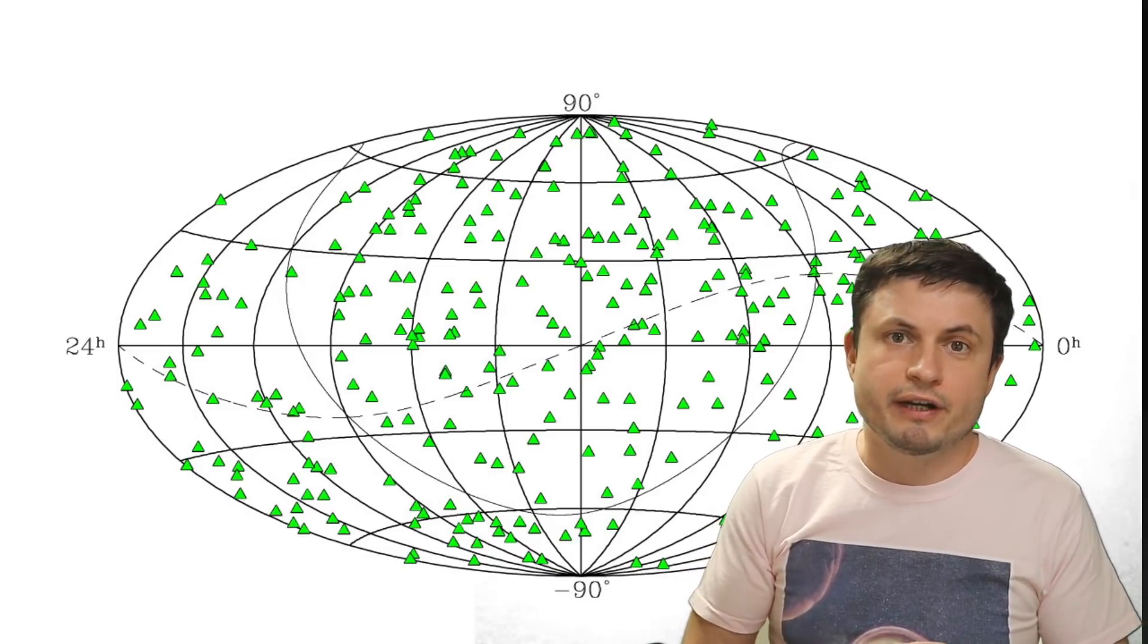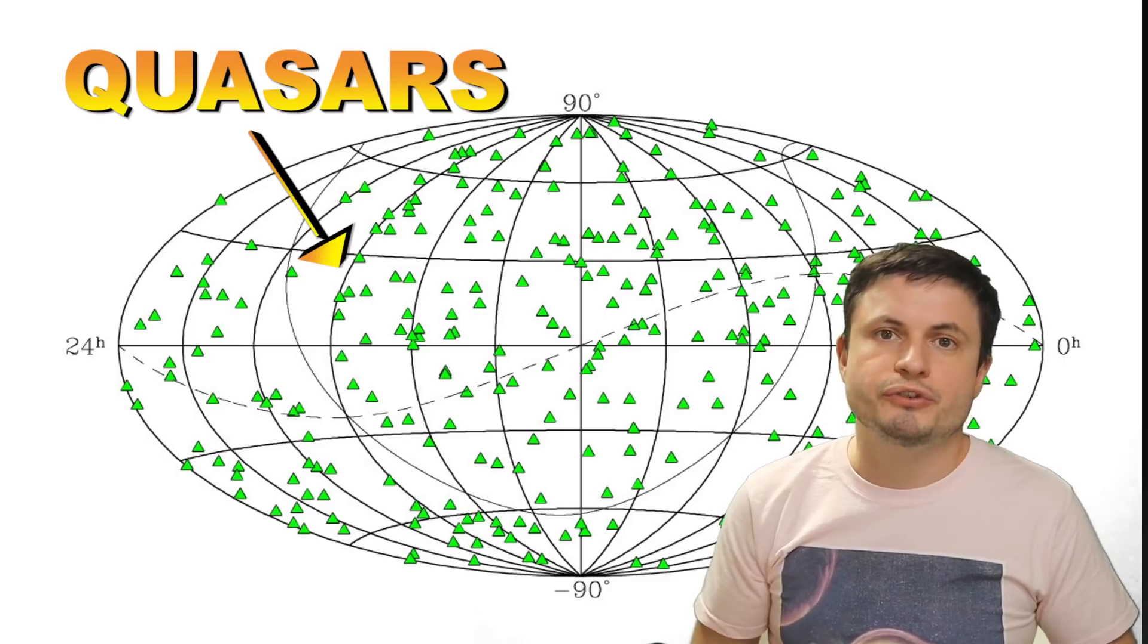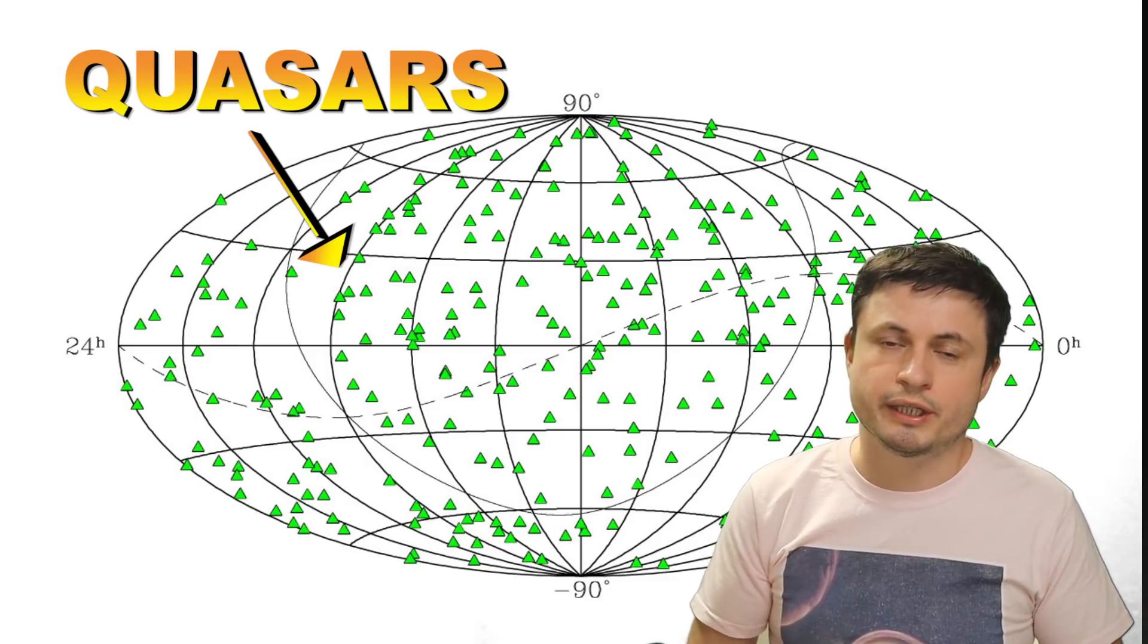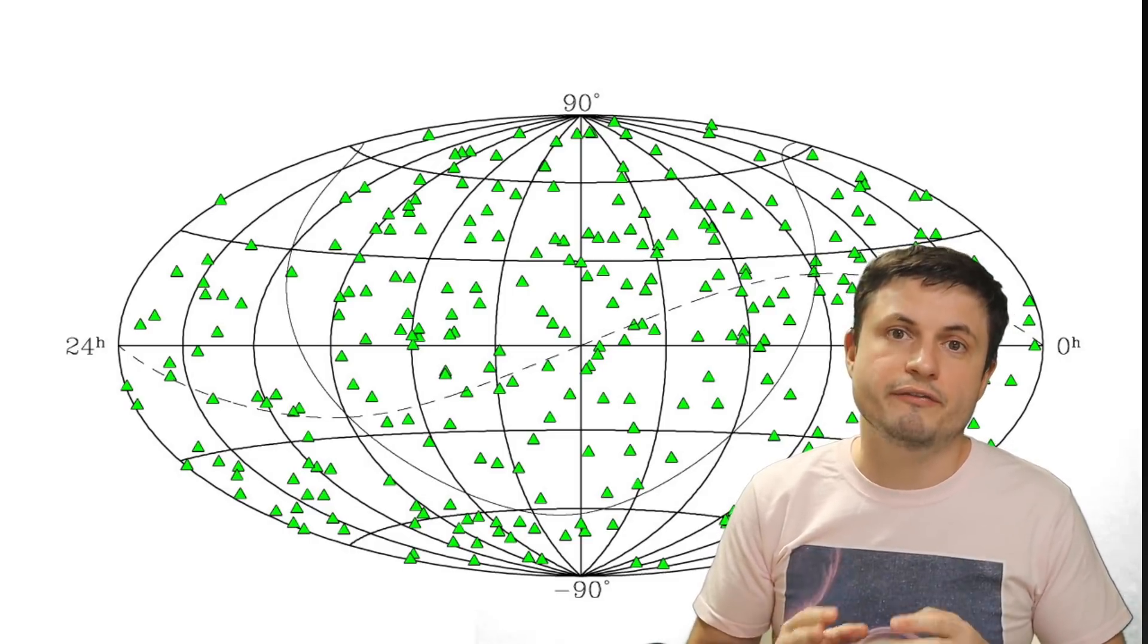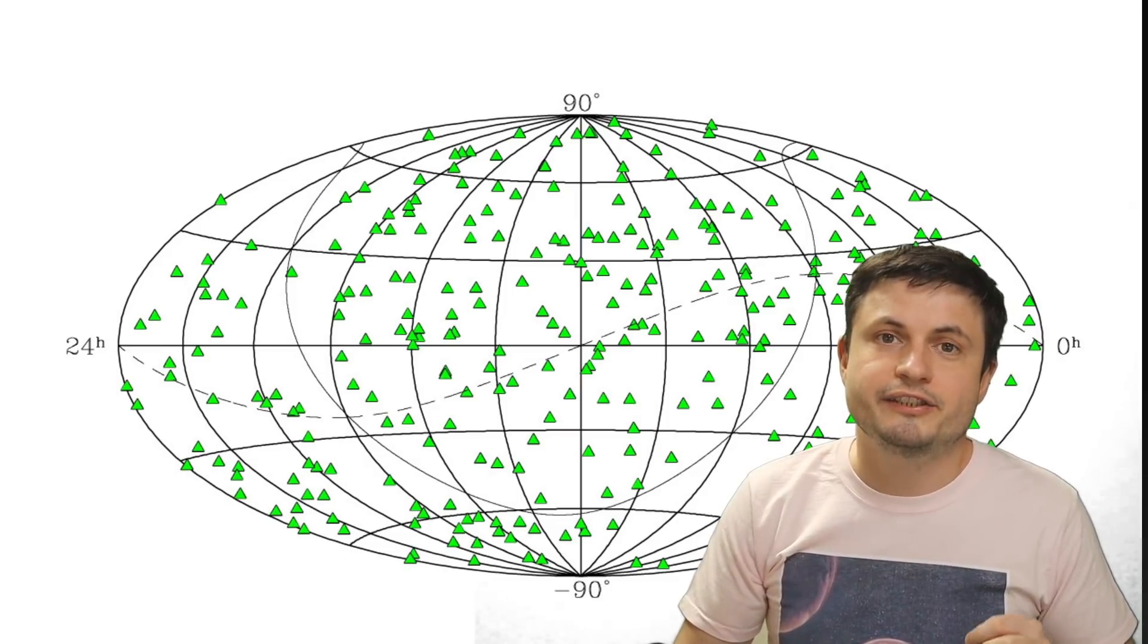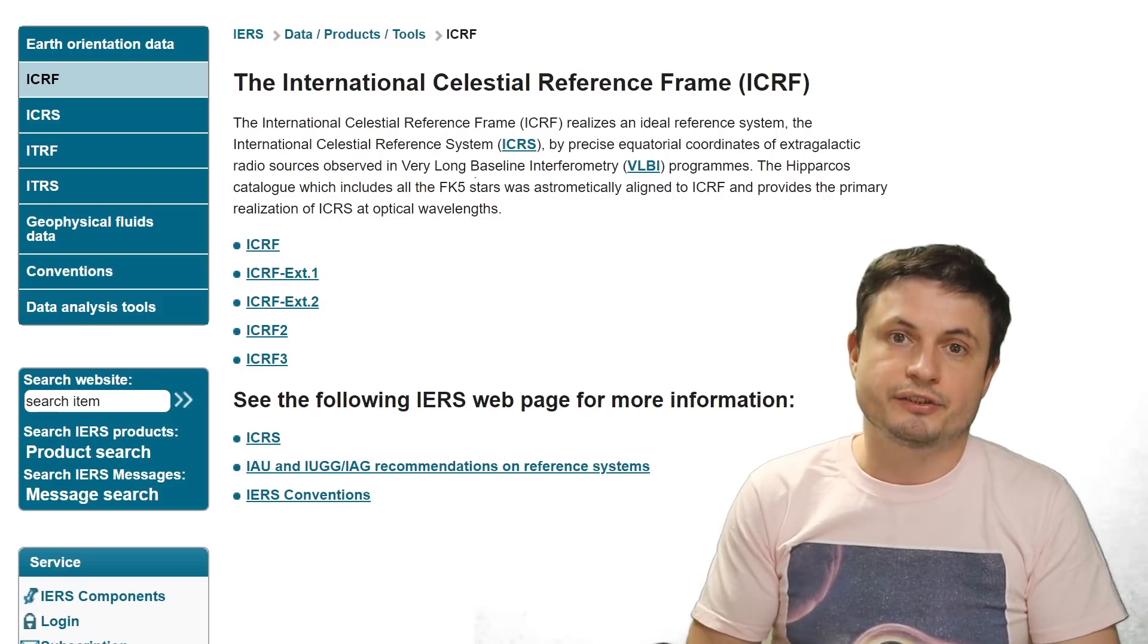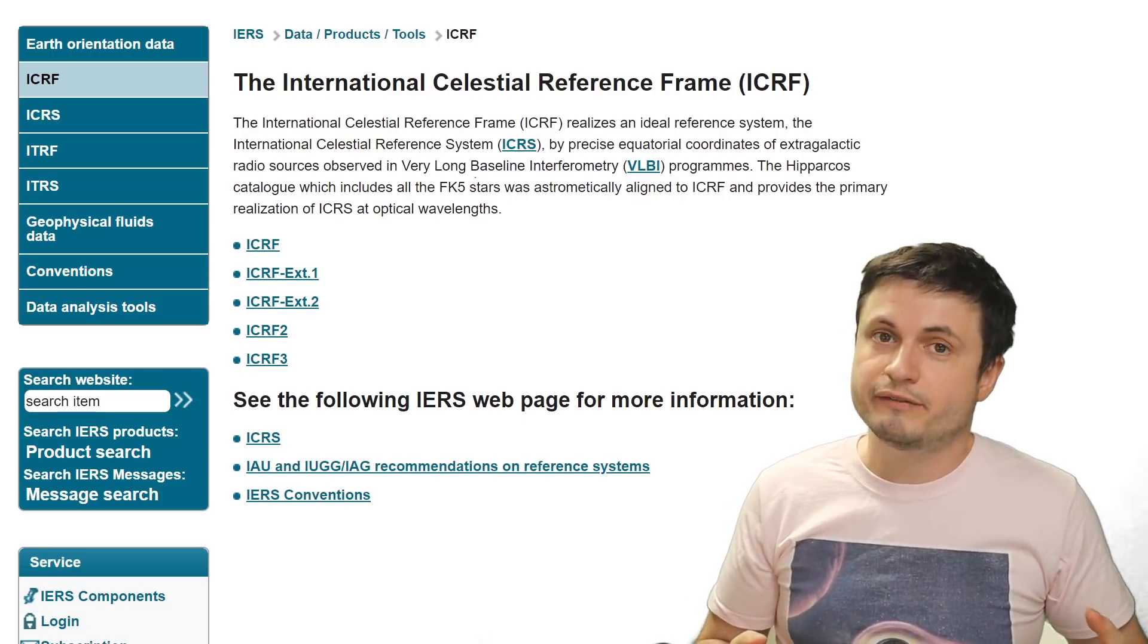And so back in 1995, the scientists created this map you see right here known as International Celestial Reference Frame, ICRF for short. And in the last few decades, we've actually advanced this to the point where now this map is very, very complex.